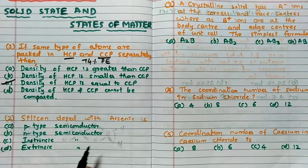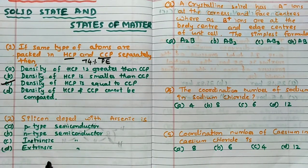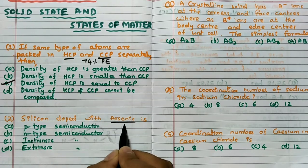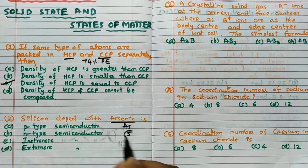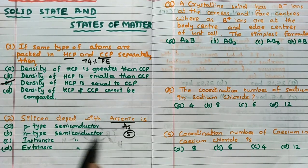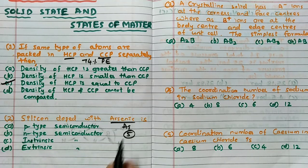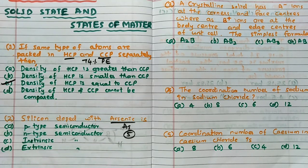Then silicon doped with arsenic, what type of semiconductor is formed? Remember, silicon has 4 valency, arsenic valency is 5. So when silicon is doped with arsenic, 5 valency, 1 electron will be extra on each that particular point. Silicon can form 4 bonds, but arsenic can form 5 bonds, but only 4 are surrounded, 1 electron will be extra.